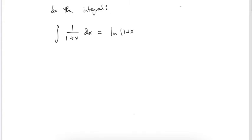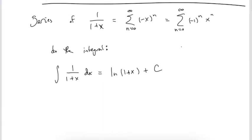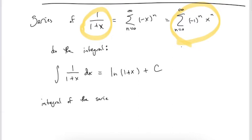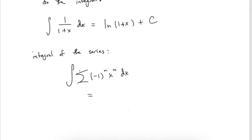There's a plus C of course, which we do have to worry about a little bit. So on one hand, the integral of 1/(1+x) is the natural log. But we can also take the integral of the series and obtain a series for ln(1+x). This is called term-by-term integration. So it's the integral of the sum of (-1)^n x^n dx, and since the sum and integral can interchange positions, this becomes the sum from n=0 to infinity of the integral of (-1)^n x^n dx.